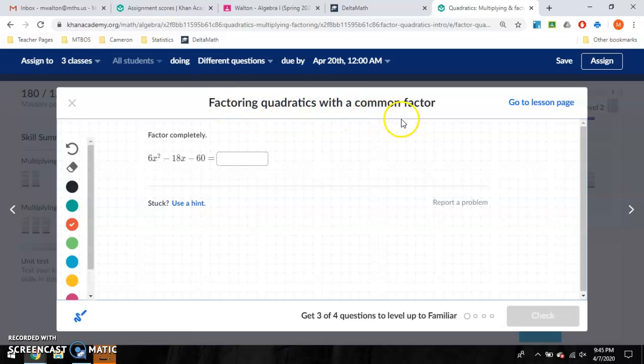So it says factoring quadratics with a common factor, and the name actually gives us a huge hint, common factor. That means that there is going to be something in these problems that I can factor out right off the bat. So let's go ahead and look for those numbers.